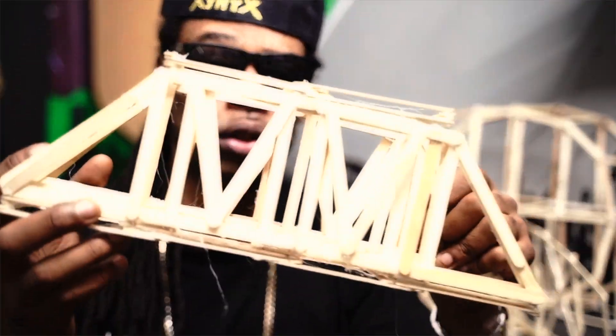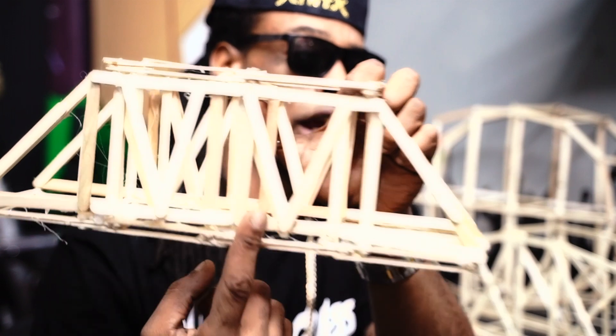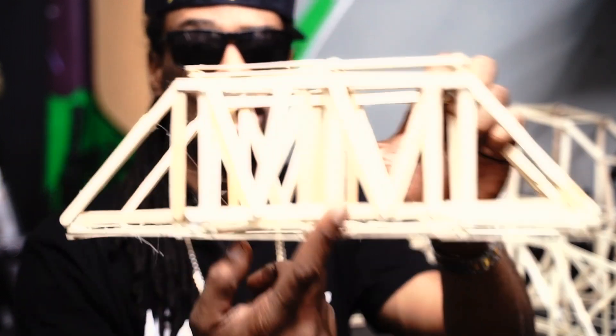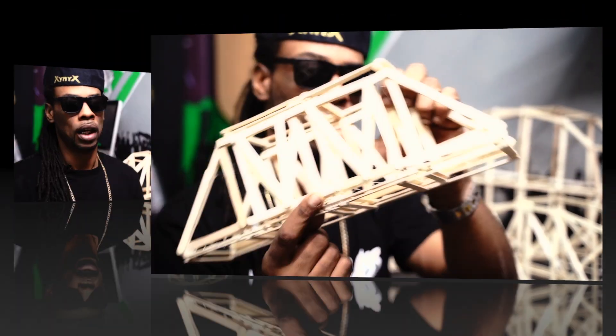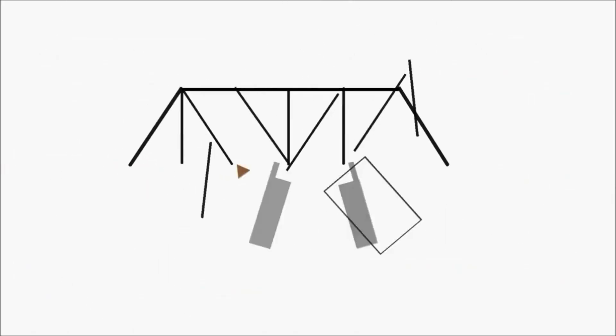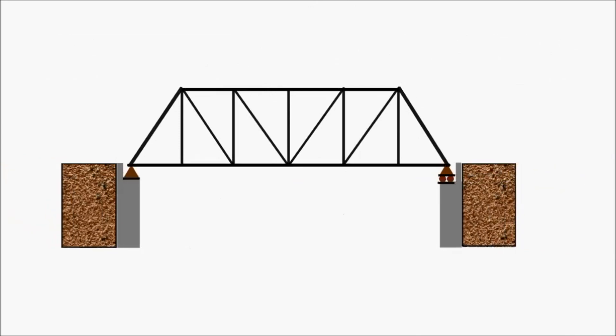Engineers love triangles — more triangles, more. A typical truss bridge is comprised of an abutment, which holds the structure to the ends of it.